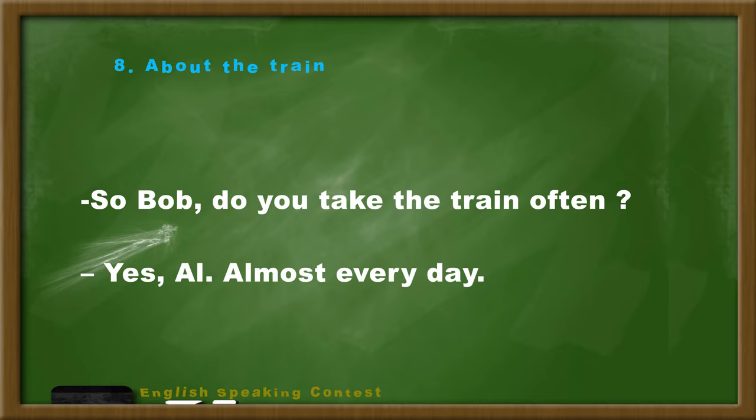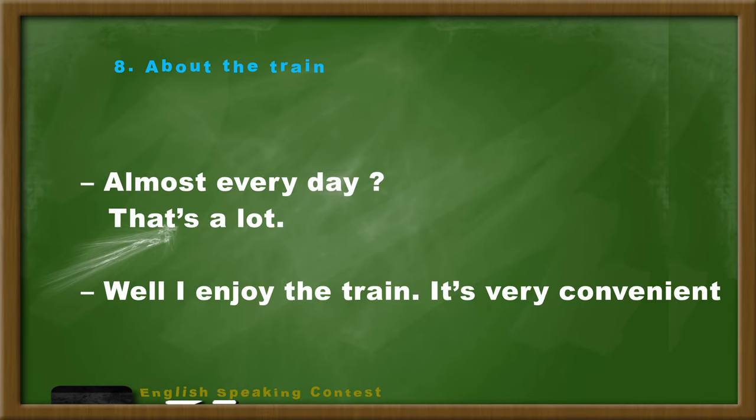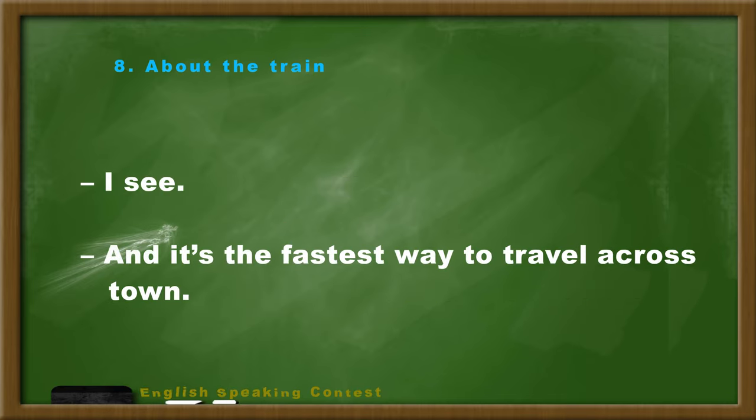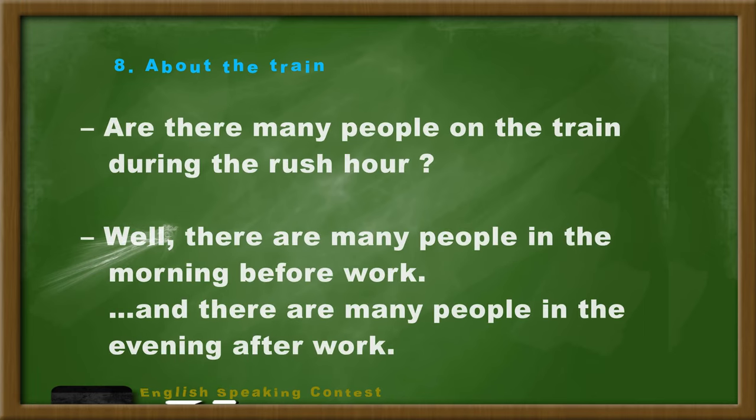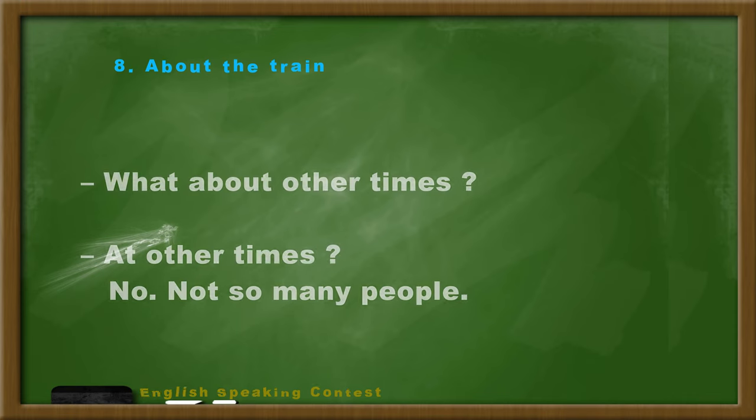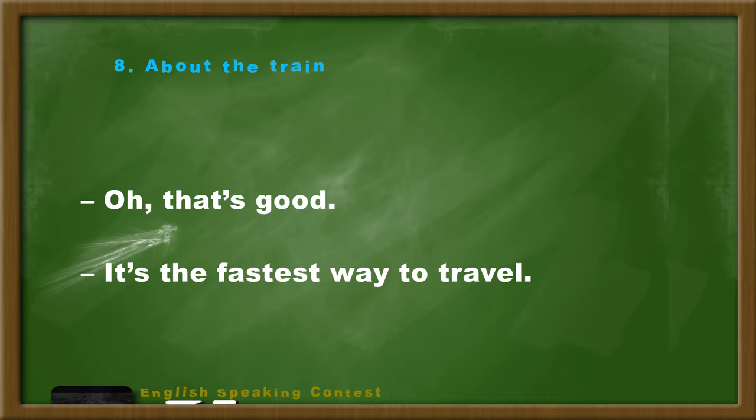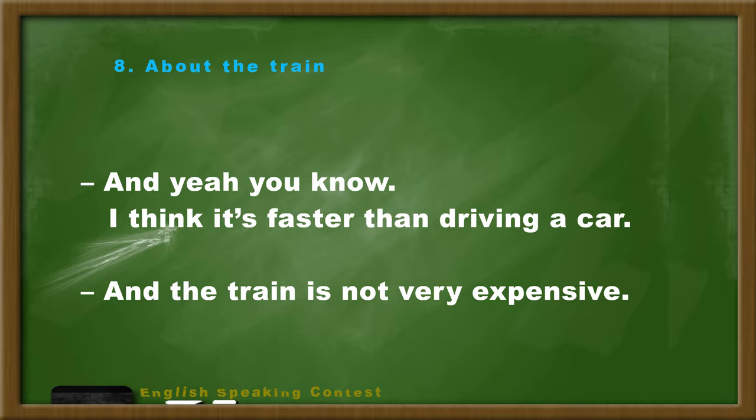So Bob, do you take the train often? Yes, Al, almost every day. Almost every day? A lot. Well, I enjoy the train. It's very convenient. I see. And it's the fastest way to travel across town. Are there many people on the train during the rush hour? Well, there are many people in the morning before work and there are many people in the evening after work. What about other times? At other times, no, not so many people. And there's never a traffic jam? On the train? There's never any traffic jam. Oh, that's good. That's the fastest way to travel. Yeah, you know, I think it's faster than driving a car. And the train is not very expensive.